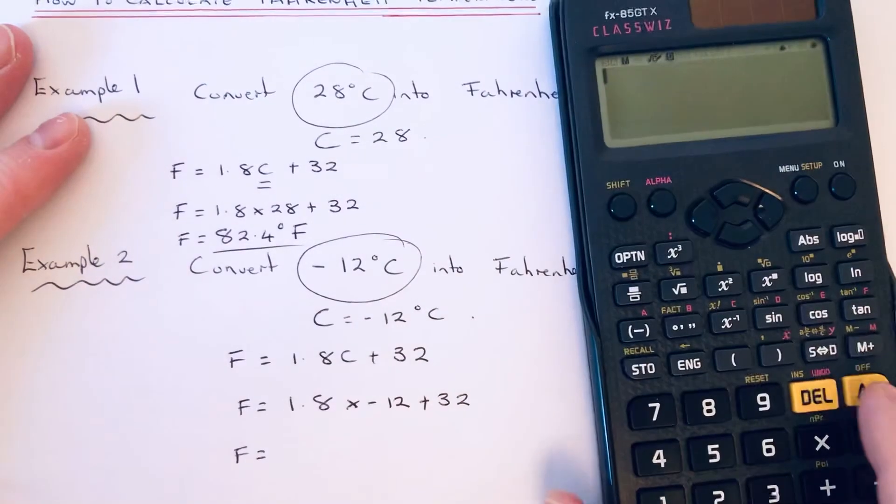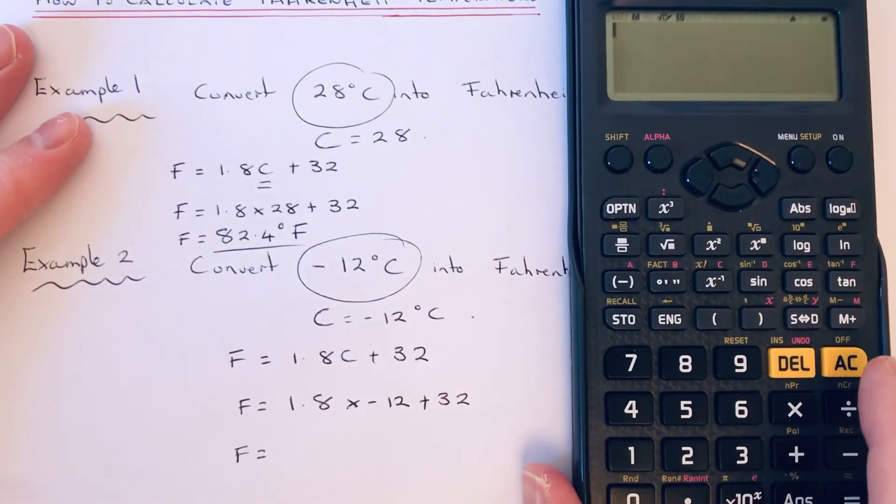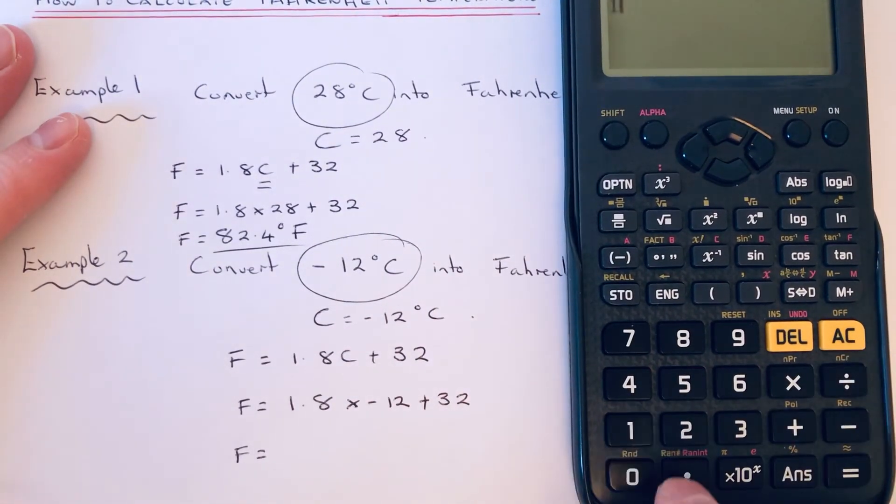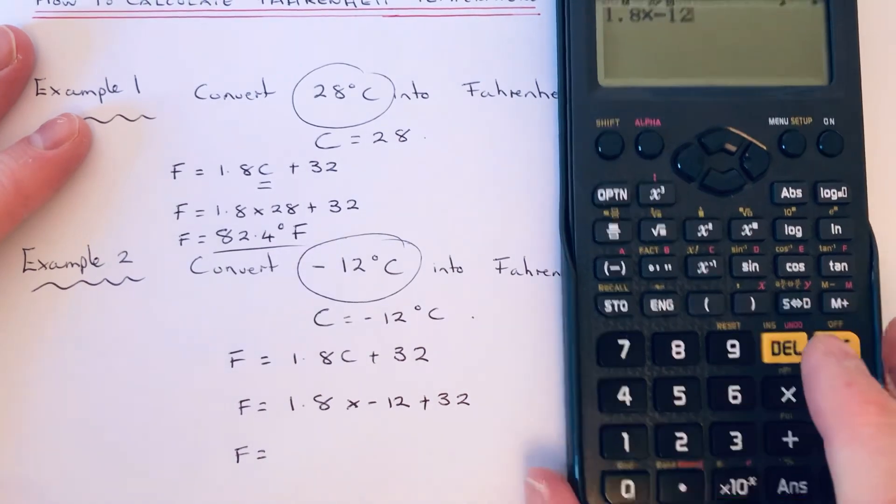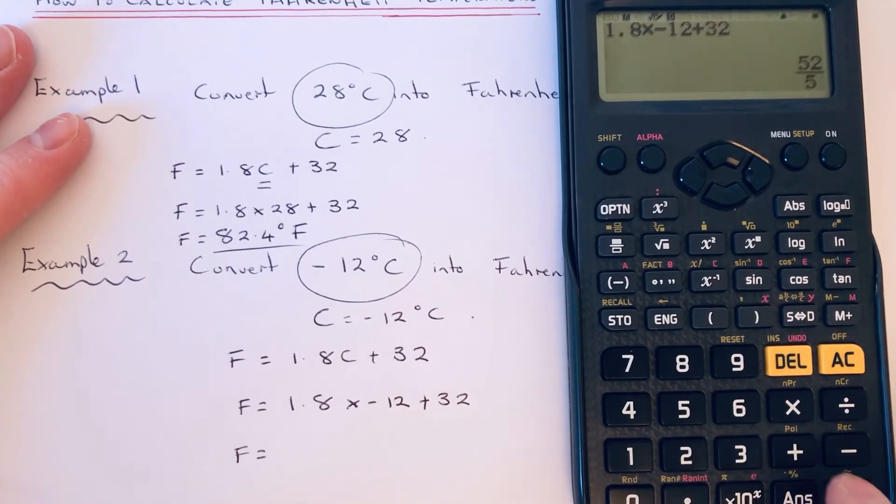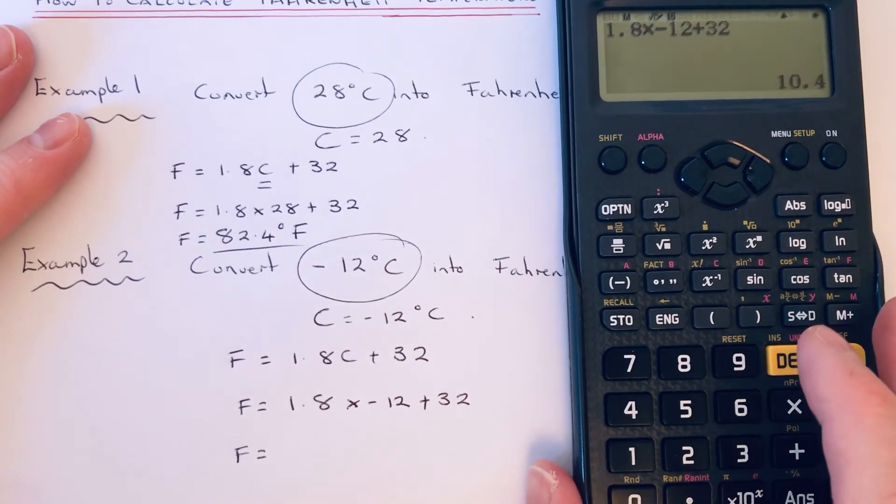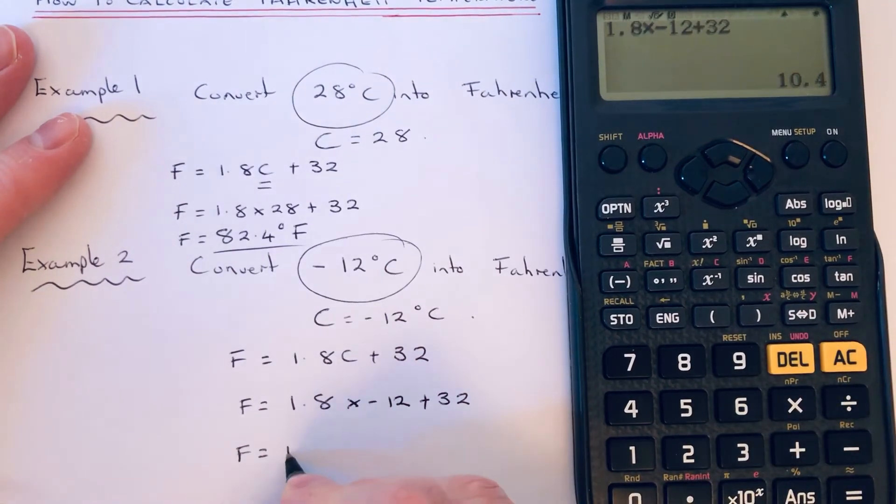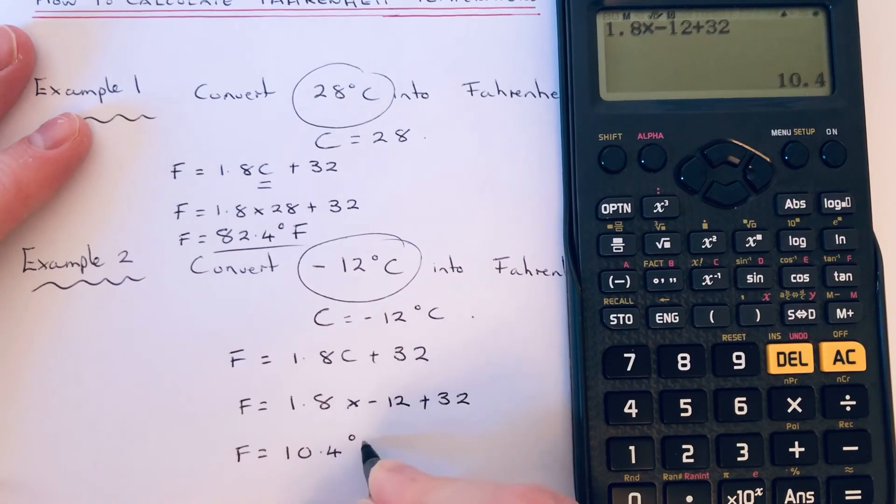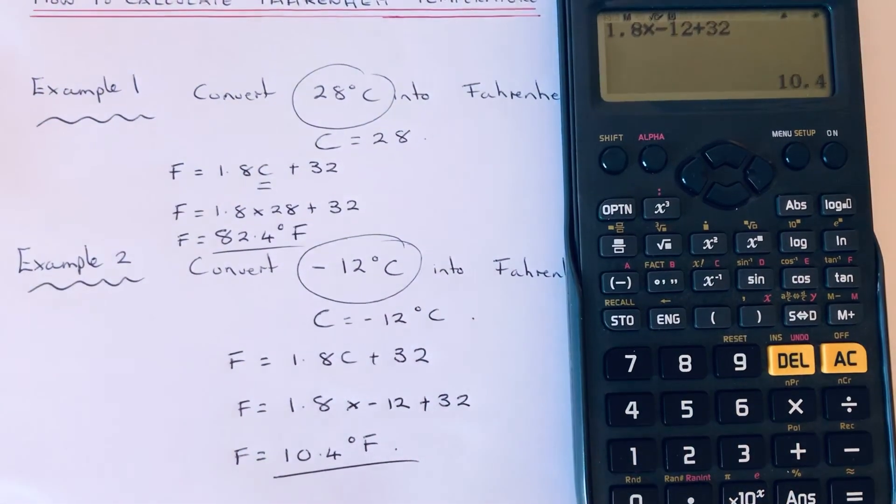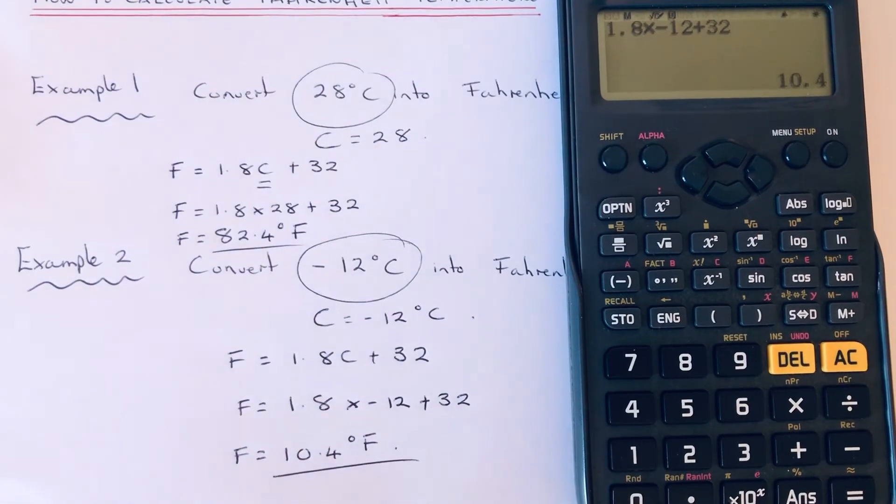So 1.8 times minus 12 add 32, and we get an answer of 10.4. That is degrees Fahrenheit. I hope you liked this video.